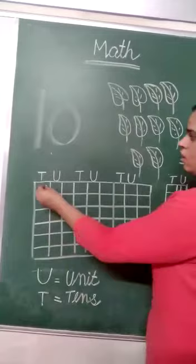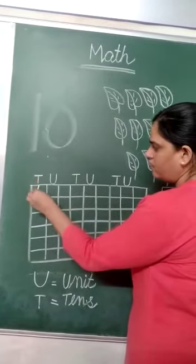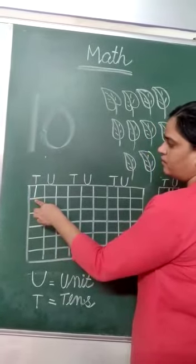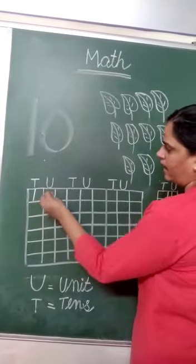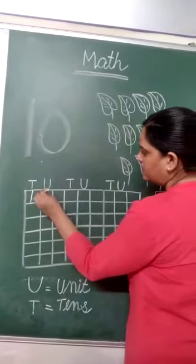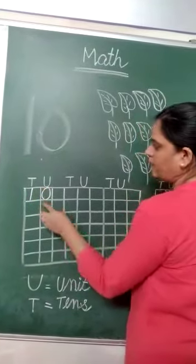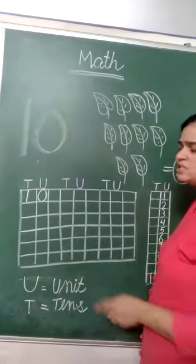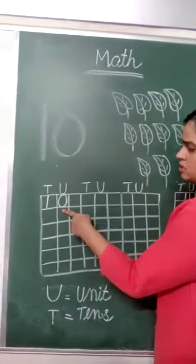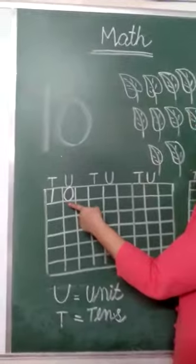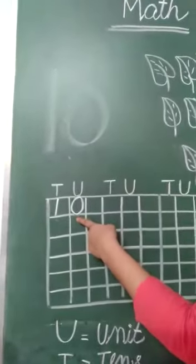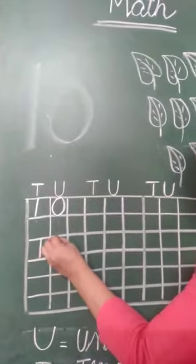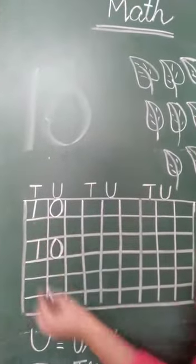Let's start how to make number 10. You know how to make 1. First, we will make 1 and make 0 — जिसे हम circle भी कहते हैं. लेकिन math में हम हमेशा circle को 0 बोलते हैं. इसे हम circle नहीं बोलेंगे, 0 बोलेंगे. 1, 0 — 10.